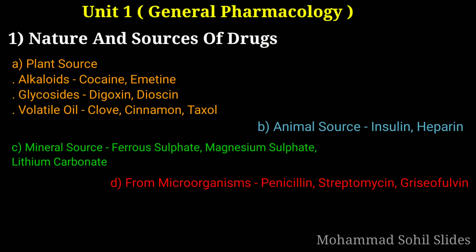Then second, animal source. In animal source the drugs are: first insulin, second heparin, and third muscone. So these are the drugs which come under animal sources. Now third, mineral source. In mineral source the drugs are ferrous sulfate, magnesium sulfate, and lithium carbonate. Then fourth is from microorganisms — penicillin, streptomycin, and griseofulvin.